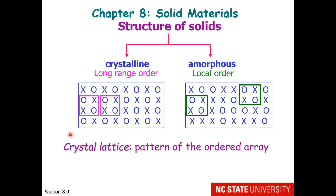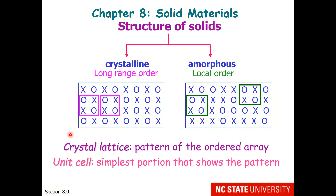The crystal lattice is the pattern of the ordered array, and the unit cell is the simplest portion that shows the pattern. For this crystal, that unit cell would be 0xx0.